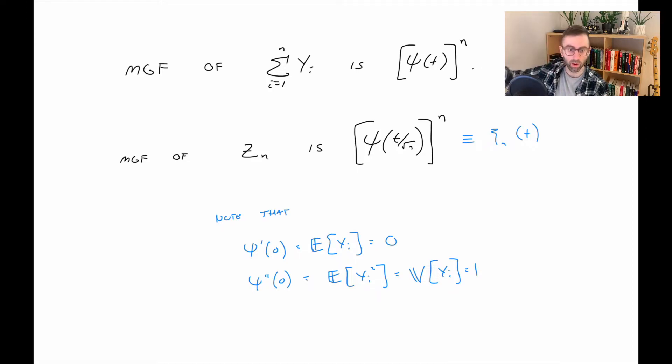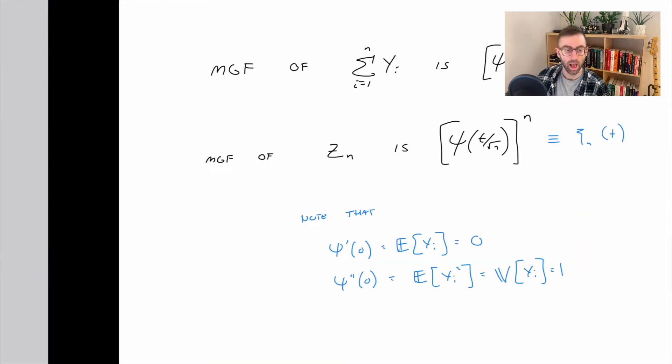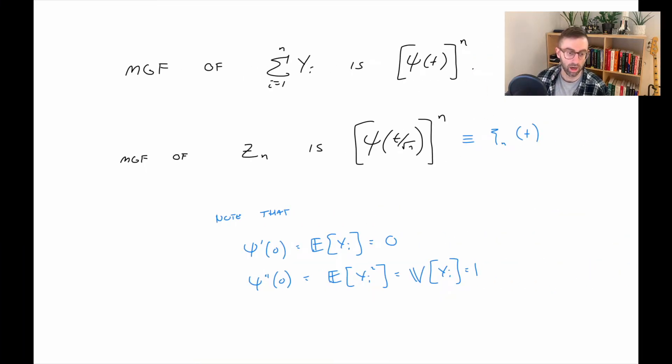So basically all we've done so far is we have defined these y sub i's, talked about their moment generating functions, rewrote z sub n as a function of these y sub i's, and then found the moment generating function of the sum of the yi's and z sub n. Ultimately what we want to show is as n goes to infinity, z sub n converges to a standard normal. What we really want to look at is what happens to the moment generating function of z sub n as n goes to infinity.